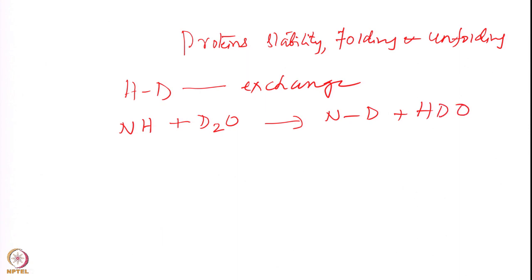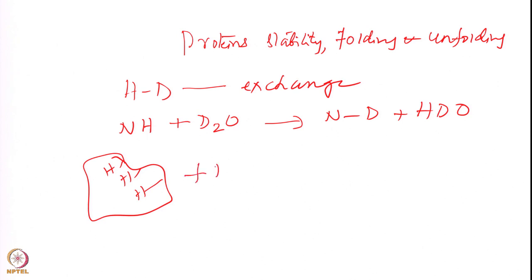You have a protein with various protons here and there, and this is the folded protein. Some hydrogens are on the surface and some are in the interior. When you put D2O in it, some of those which are on the surface will exchange, and the ones which are in the interior will take time.